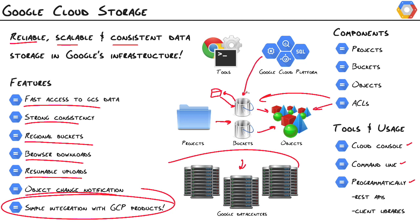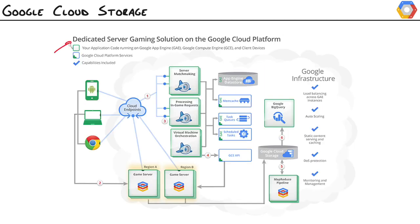We can use GCS from Compute Engine to store snapshots or persistent disks, from App Engine to store blob data or binaries, from Cloud SQL as a staging area to import and export databases, and as a staging area for BigQuery to process, analyze, or transform big data. In a dedicated server gaming use case, Cloud Storage stores game binaries and game assets used by Compute Engine instances, which also upload their logs and game data to GCS, so MapReduce can process and transform that data before it gets ingested into BigQuery for analysis. This shows exactly how Google Cloud Storage is the middleman and integration point for all these GCP products.